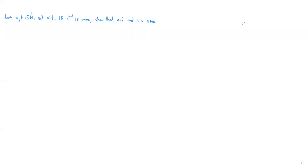We're back with another proof-based video, and this video will lead to an interesting result. The question is, let a and n be natural numbers, and n is greater than 1. If a to the n minus 1 is prime, show that a has to equal 2 and n is prime.